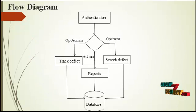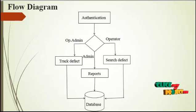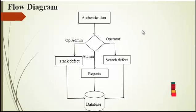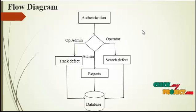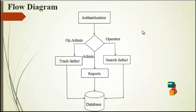The flow diagram shows the overall process of our system. There are three main processes: admin, operator, and operational admin. Now let us see about the admin process.